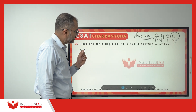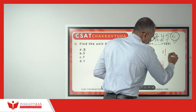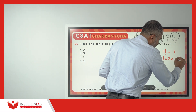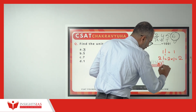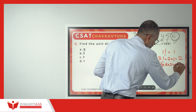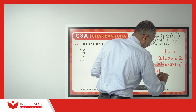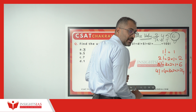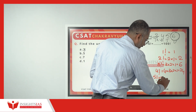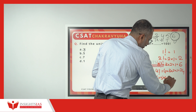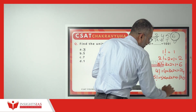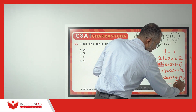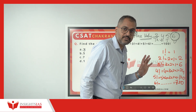Now, how to solve this in a very simple way. 1 factorial is equal to 1. 2 factorial is equal to 2 into 1, which is 2. Similarly, 3 factorial is 3 into 2 into 1, which is 6. 4 factorial is 4 into 3 into 2 into 1, which is 24. 6 factorial value is 6 into 5 into 4 into 3 into 2 into 1, which is 720, and so on.